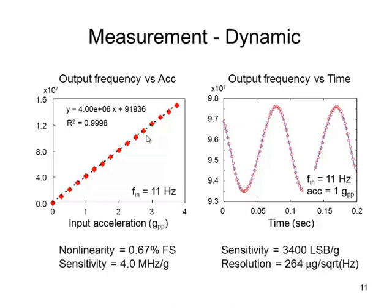From this data, we calculate the nonlinearity, which is the deviation from this straight line, to be less than 1% full scale. The sensitivity is 4.0 megahertz per G.